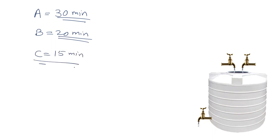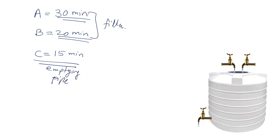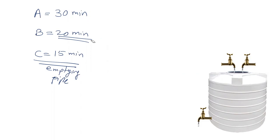C represents negative work — it is an emptying pipe. A and B are the filling taps. I will show you the method to solve this question.